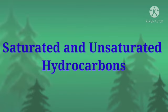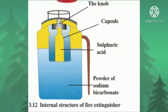Some hydrocarbons have a multiple bond between two carbon atoms. A multiple bond can be a double bond or a triple bond. Hydrocarbons having at least one multiple bond are called unsaturated hydrocarbons. For example, ethene, ethyne, propene, propyne, etc.